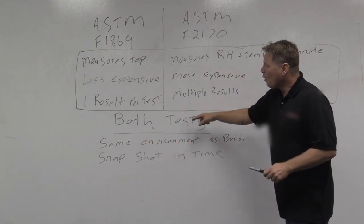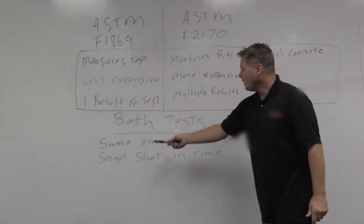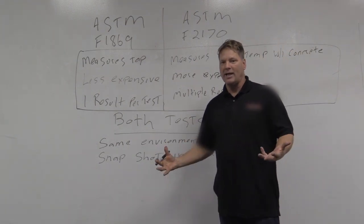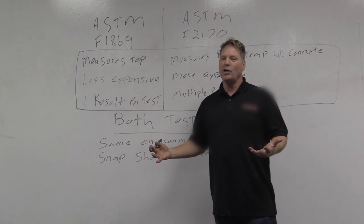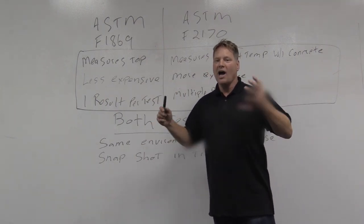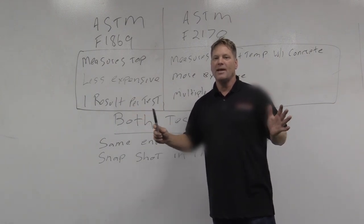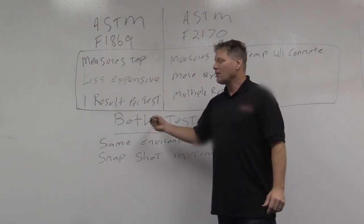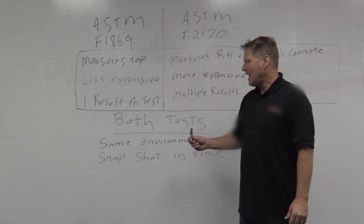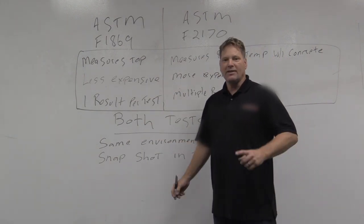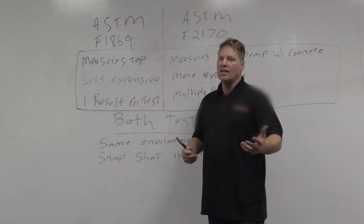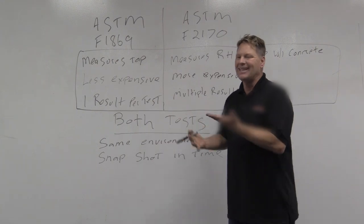Both tests need the building to be in the same basic environment that it's going to be operating in, which is really hard on a new construction site. The tests both require that a hygrometer is used to document the changes in temperature and relative humidity if the building is not in the operating condition. Many experts believe that the RH in-situ probes are less susceptible to that condition than the calcium chloride test because it's inside the concrete and gets a buffer from the changes in temperature.